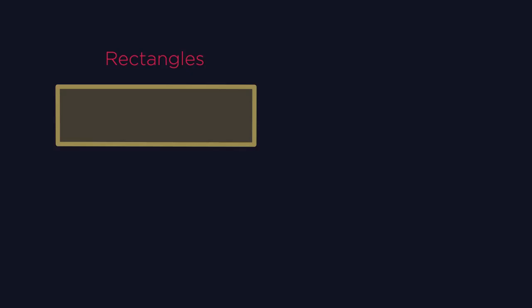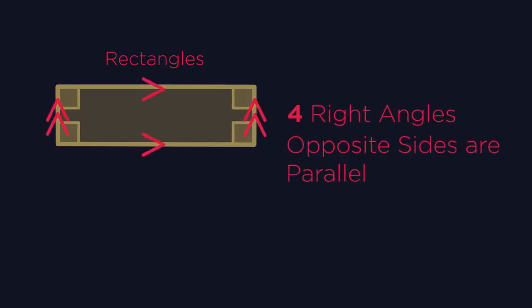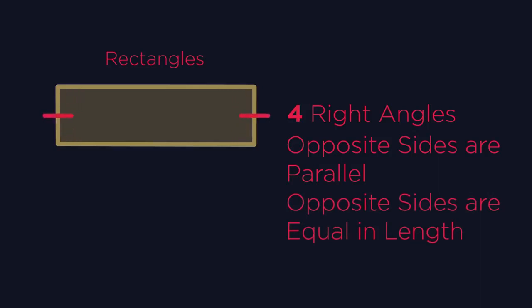What about rectangles? Also four right angles and opposite sides are parallel. But this time the lengths aren't all the same. Opposite sides are equal in length. These and these. Did you know that a square is a type of rectangle?